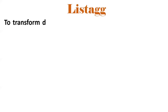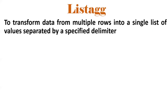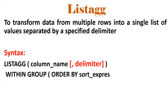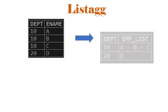Next one is the LISTAGG function. By using this function, if you want to transfer multiple rows into a single row by a specified delimiter, we make use of LISTAGG. The syntax for it is like this. With an example, we can understand what LISTAGG exactly does — for instance, displaying the department-wise employee list in horizontal manner separated by a hyphen.